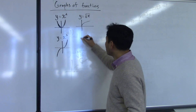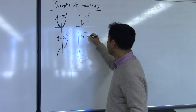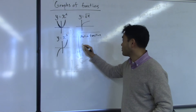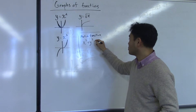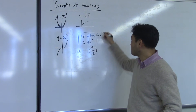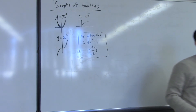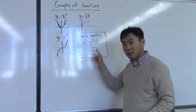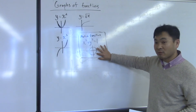This is not a function, but still important that you know the graph of it. x squared plus y squared equal to one — it's a circle. Why is this not a function? Because it doesn't pass the vertical line test. If you draw the vertical line, it meets the graph more than once. So this is not a graph of a function.